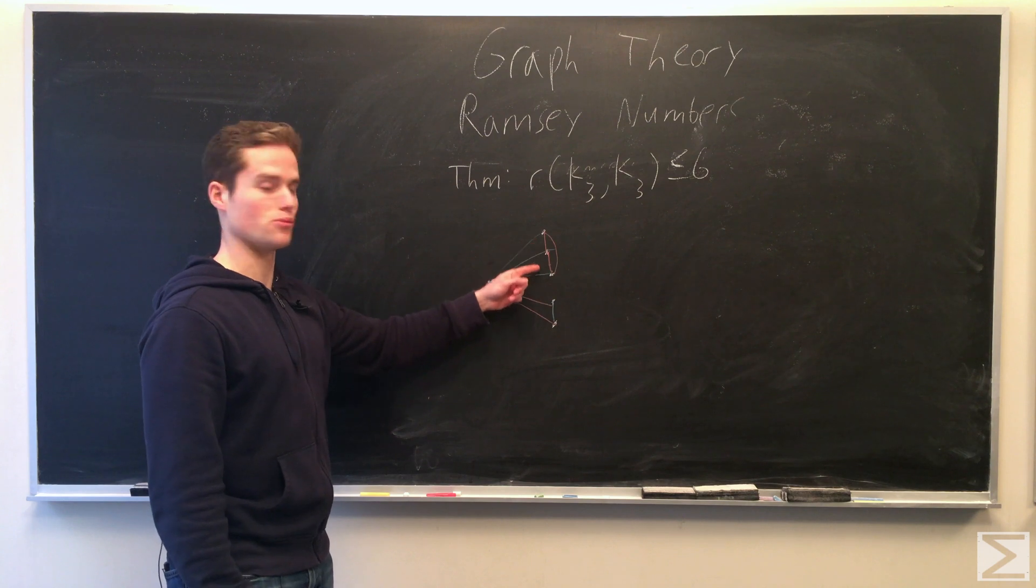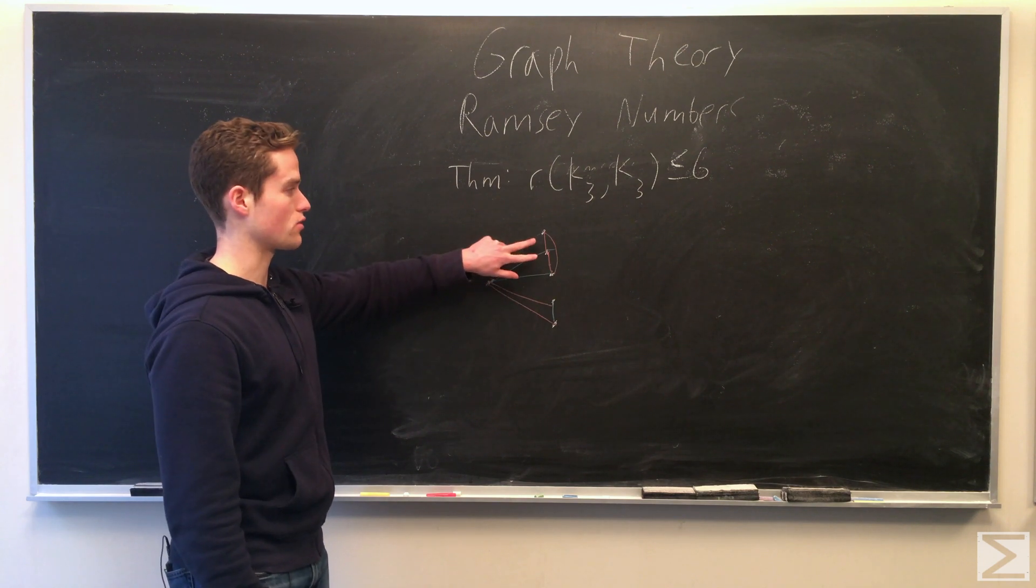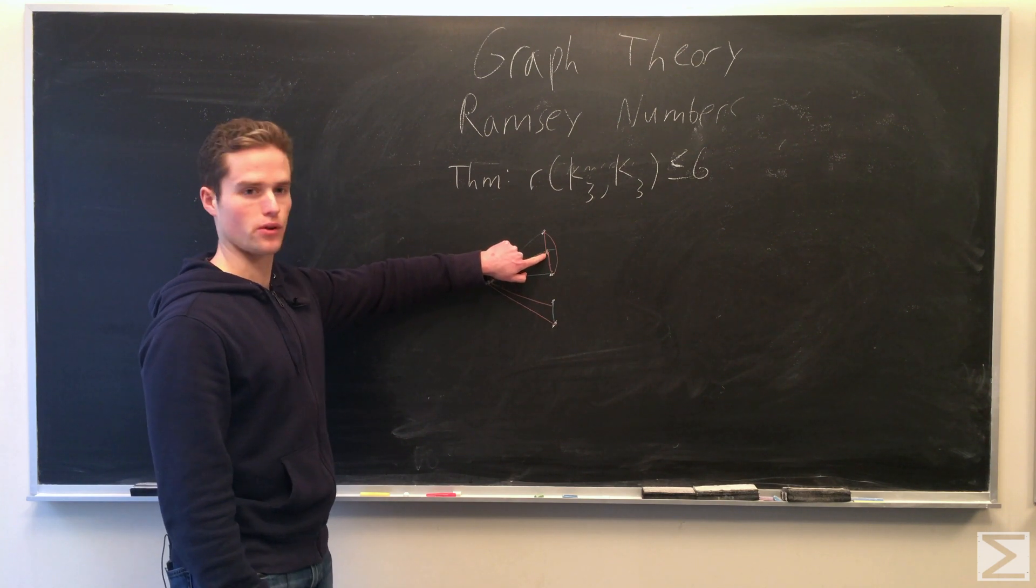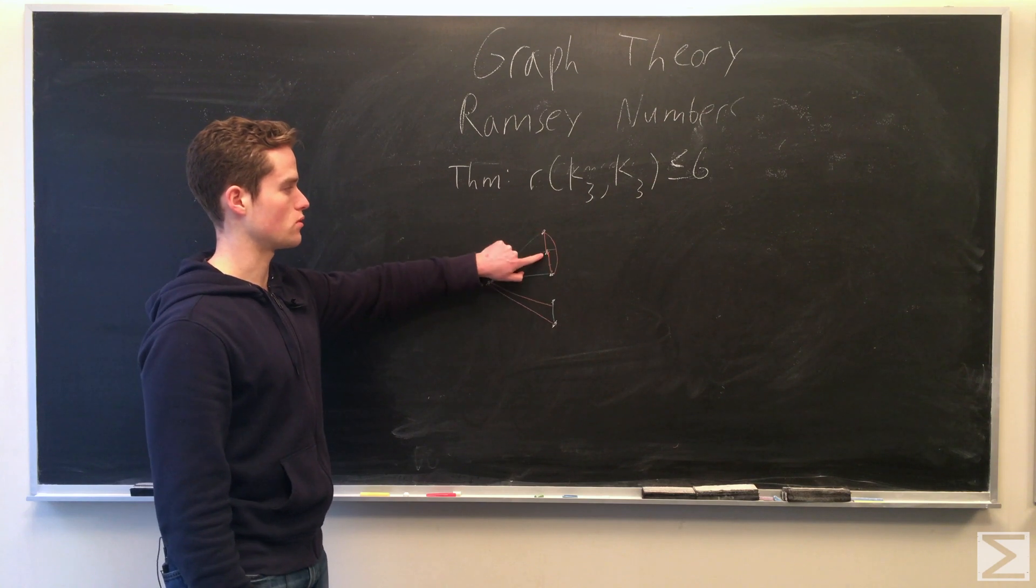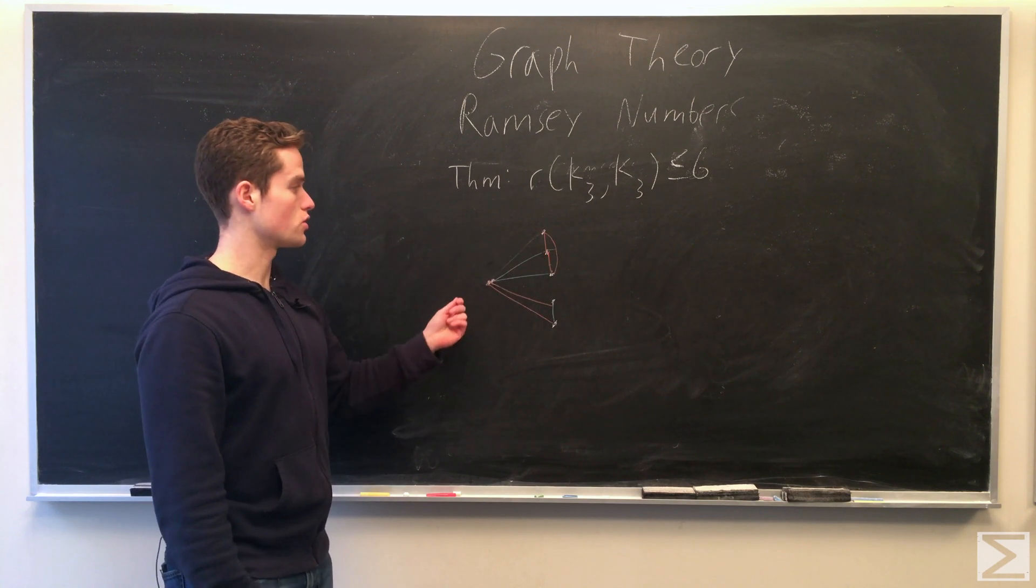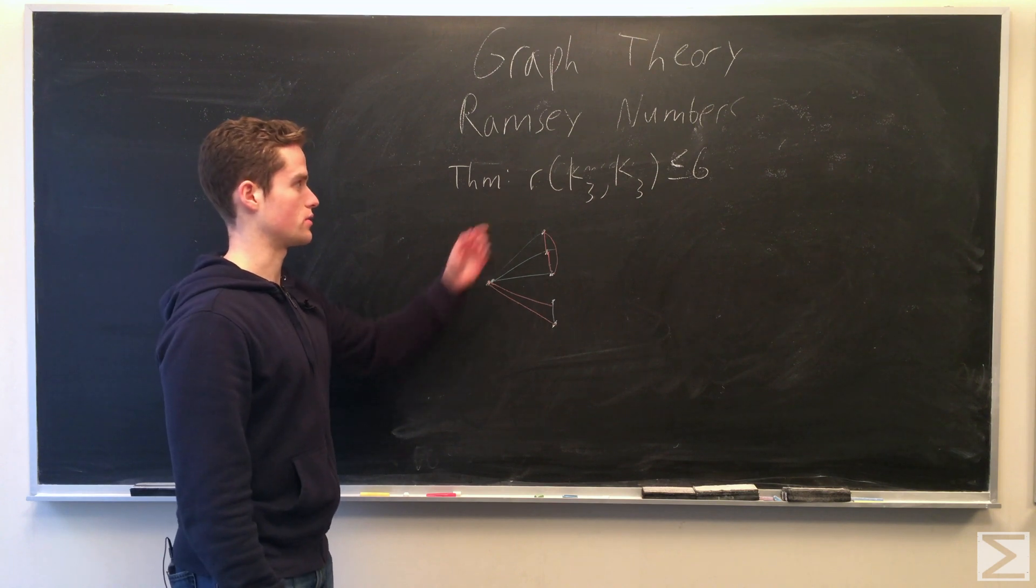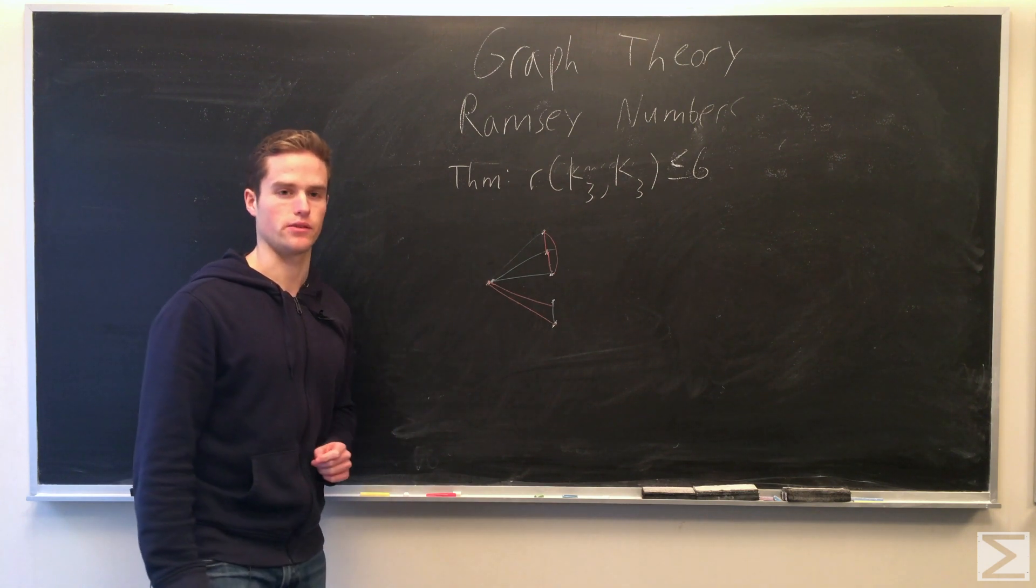But if none of these vertices have blue edges between them, then we again have a triangle. We can go from one point to the next to the other one. So in any case, we're forced to have a triangle. And that shows that this Ramsey number is less than or equal to 6.